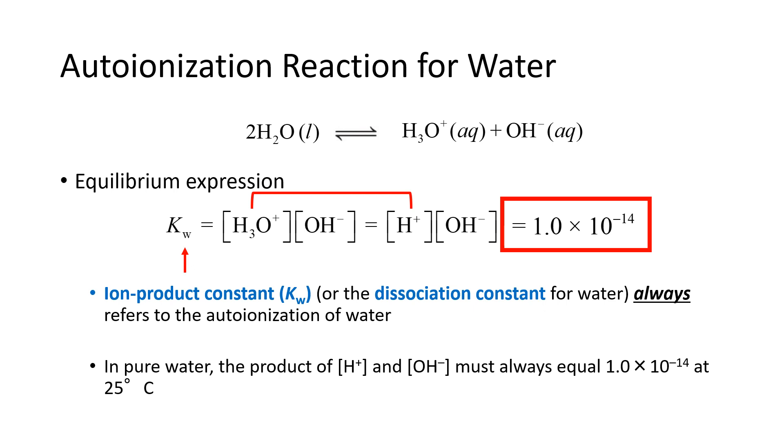In pure water, the product of H+ and OH- must always equal 1.0 times 10 raised to the minus 14. This is at 25 Celsius. This constant is temperature-dependent, and we'll assume that the acids and bases we discuss here are at 25 degrees Celsius.